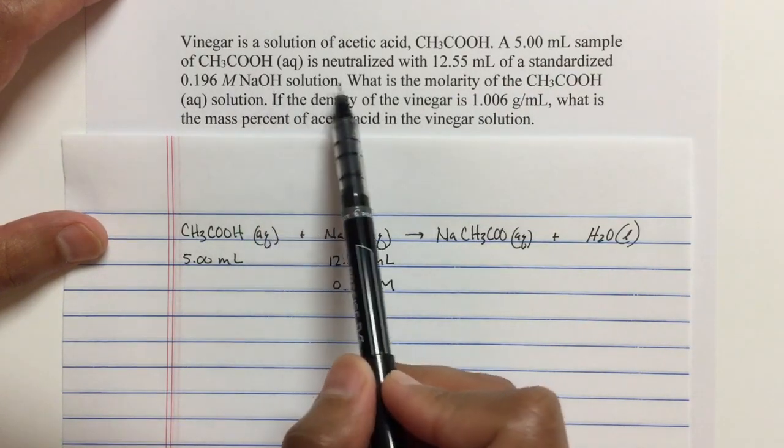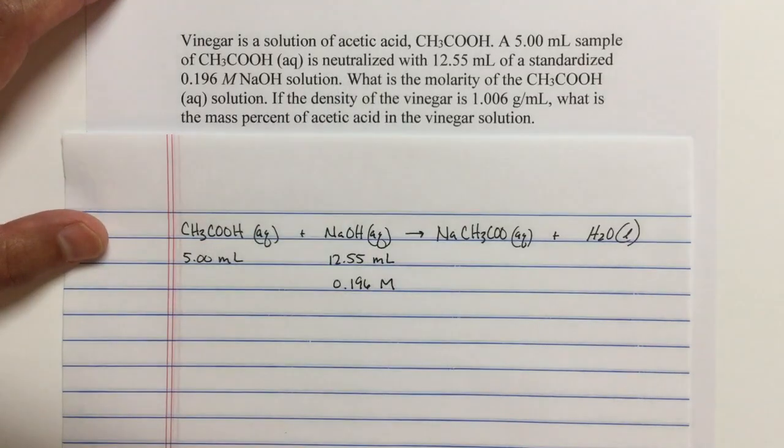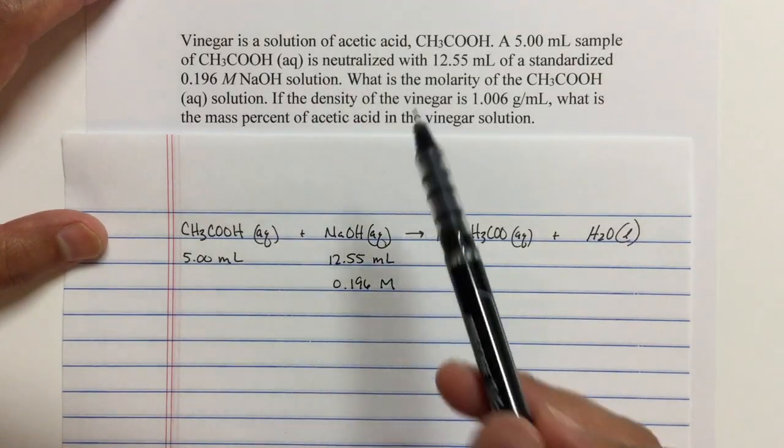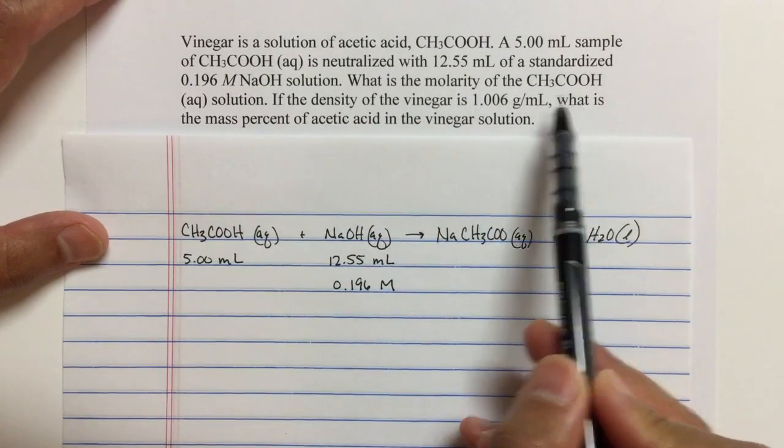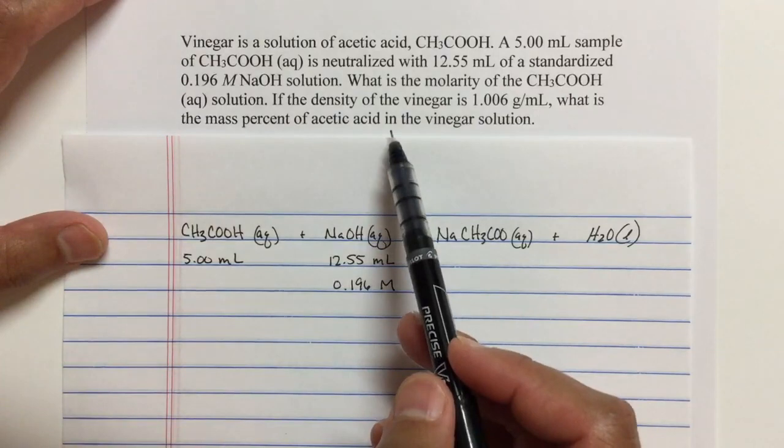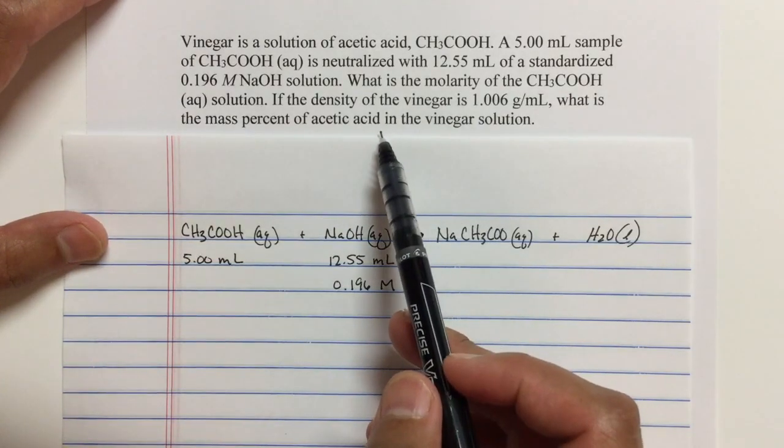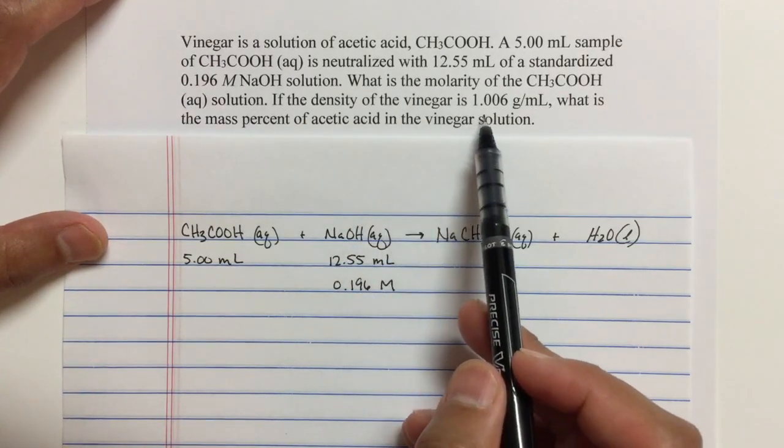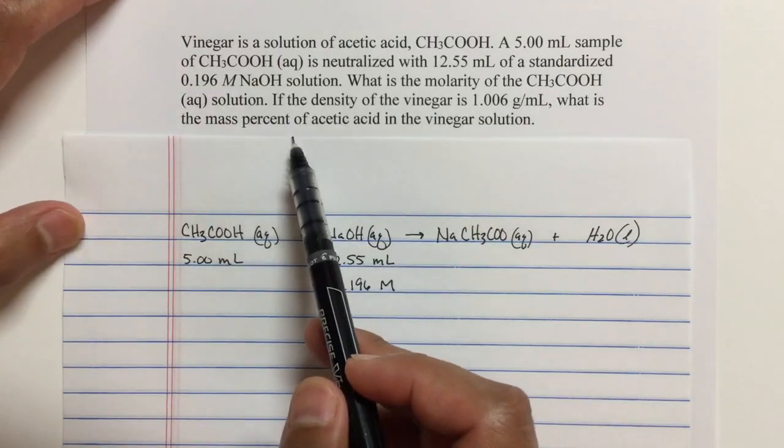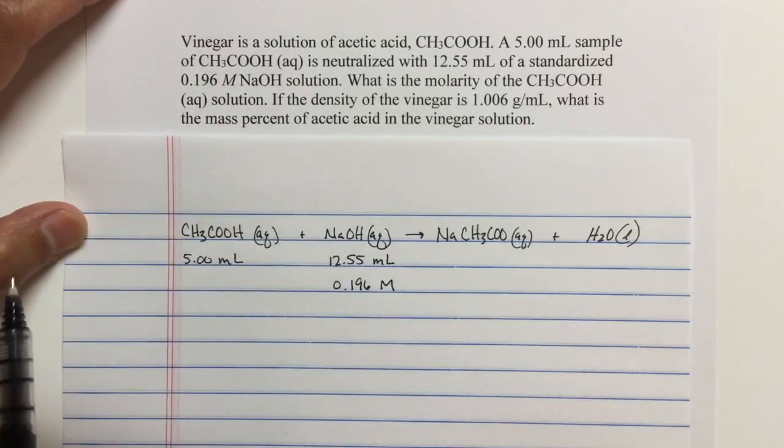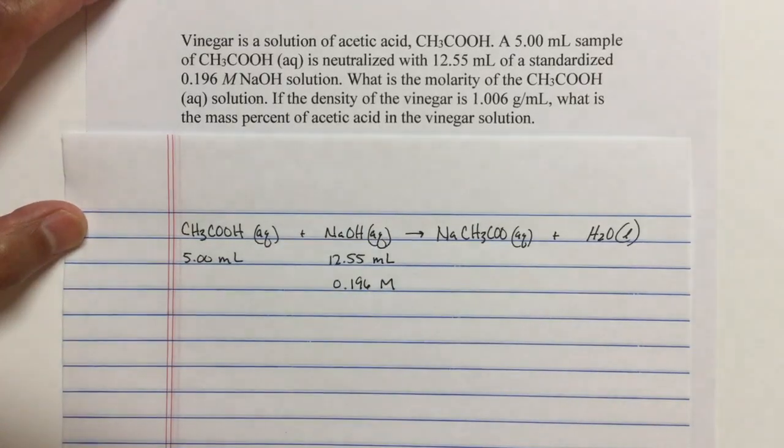And so when there's an acid-base reaction, remember those are called neutralizations. The goal is to find the molarity of the acetic acid solution. And then there's a second question, a second problem. If we know the density of the solution of vinegar, what is the mass percent of acetic acid in the vinegar solution?